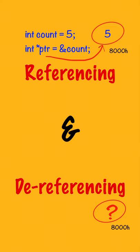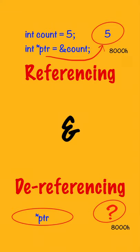Getting the value from a memory location is known as dereferencing. The value can be retrieved from the memory location with the asterisk operator — asterisk ptr would give the value stored at eight thousand.